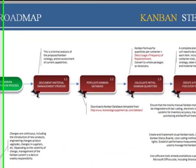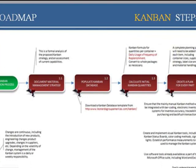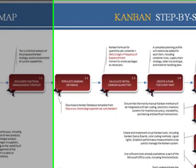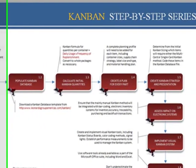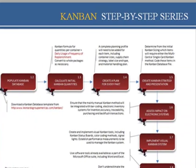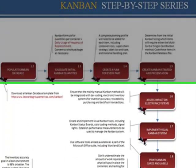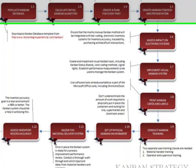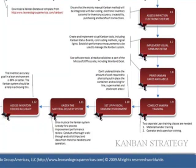And what it is, is a 10,000-foot level view of all of the major implementation steps in implementing Kanban, and the order in which they also need to be accomplished. And you'll be able to click on the button shown below on your screen, and you'll be able to download this Lean Roadmap immediately through our Flow Publishing website.